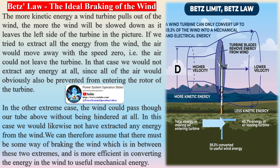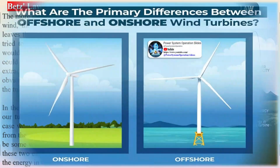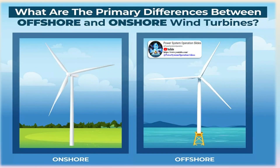Betz's law applies to all Newtonian fluids, including wind. If all of the energy coming from wind movement through a turbine were extracted as useful energy, the wind speed afterward would drop to zero. If the wind stopped moving at the exit of the turbine, then no more fresh wind could get in — it would be blocked. In order to keep the wind moving through the turbine, there has to be some wind movement on the other side with a speed greater than zero.